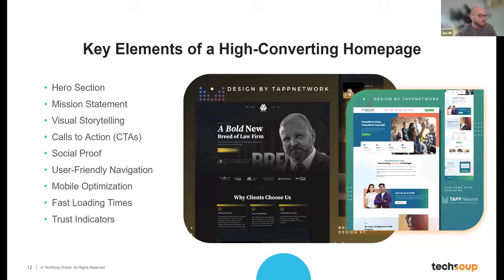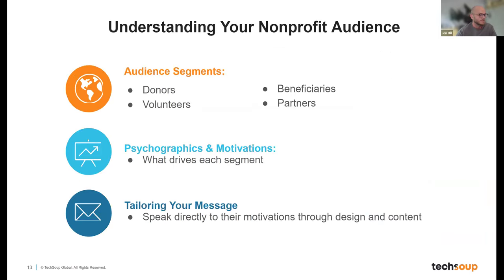These elements include the hero section, mission statement, visual storytelling, CTAs, social proof, user-friendly navigation, mobile optimization, fast loading times, and trust indicators. But first, you need to understand your audience — donors, volunteers, beneficiaries, and partners. Each one is different, but they all care about your cause. By figuring out their psychographics and motivations, we can tailor our homepage to speak their language, crafting a message that resonates, a design that inspires, and a call to action that can't be ignored. When we do this right, our homepage becomes a powerful tool that builds relationships, drives support, and helps make a real difference.